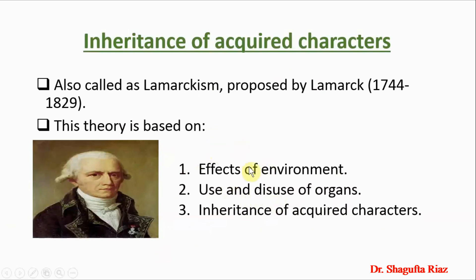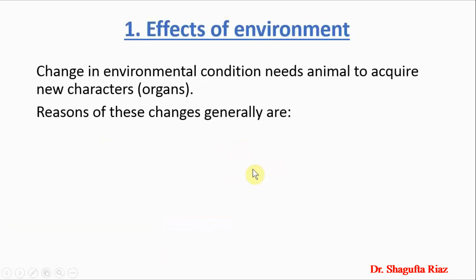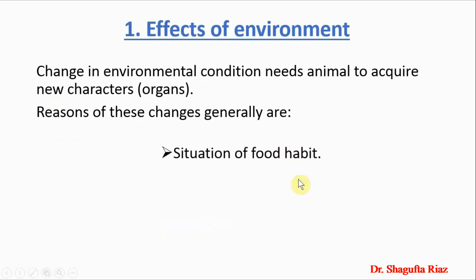The first postulate is the effects of environment. Lamarck believed that a change in environmental conditions forces animals to acquire new characters or organs. The reasons behind these changes can be related to food habits, physiological needs, or the need for shelter.